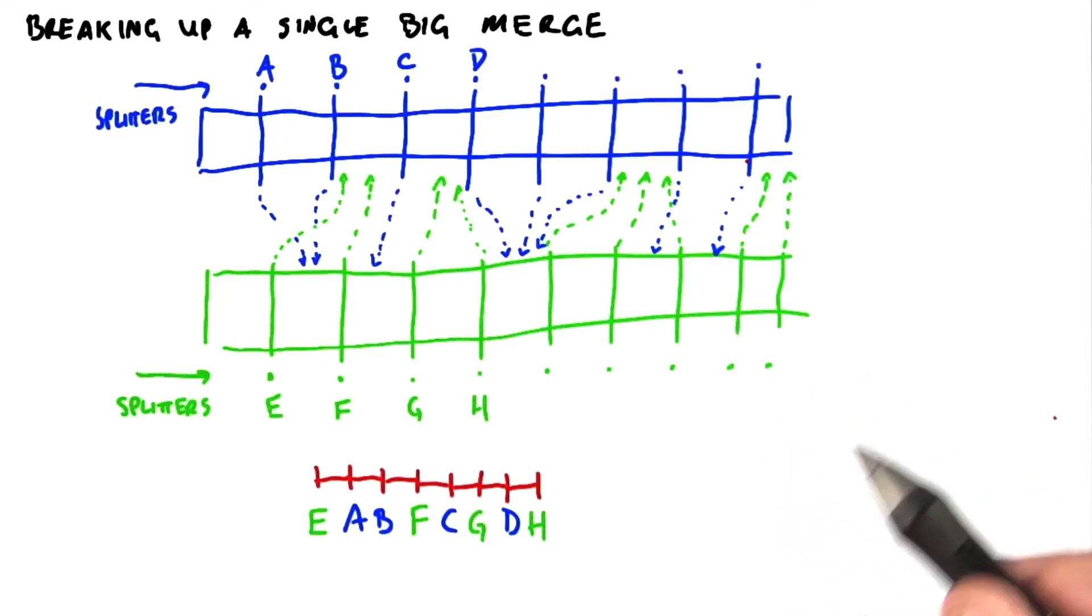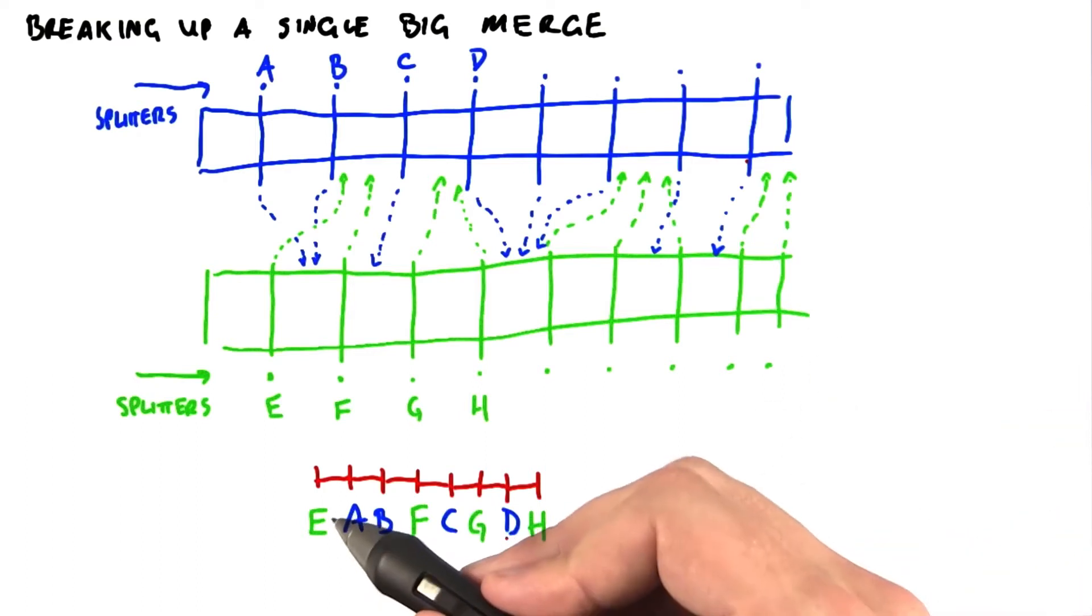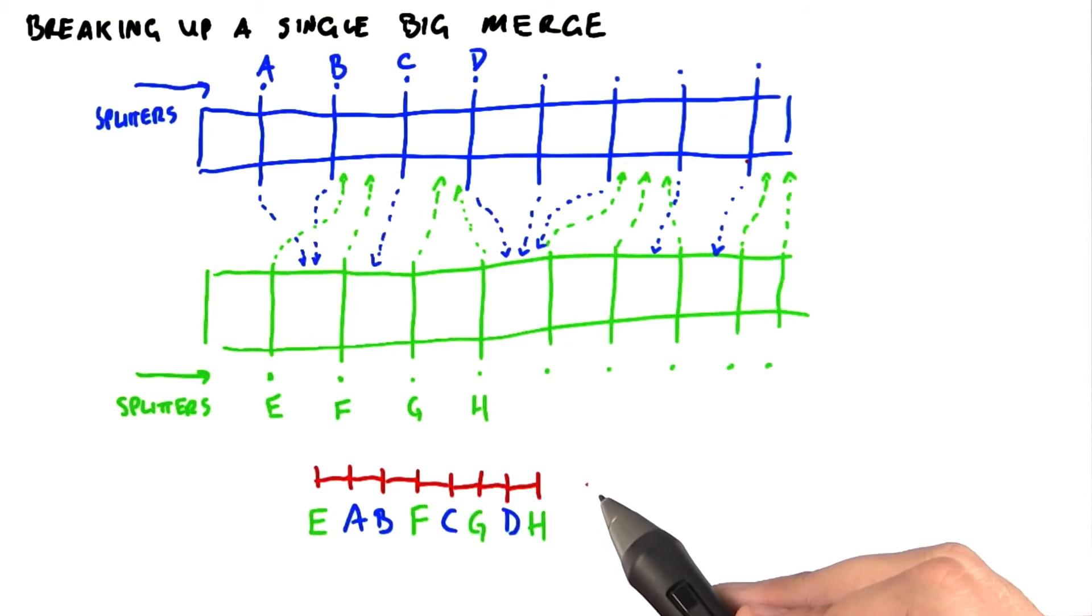Now, here's the cool bit. What I will submit to you is that we now have a sorted list of splitters, and the elements that fall between any two splitters in this list are an independent set that we can send to an SM and independently sort. So the elements between E and A can go to one SM. The elements between A and B can go to another SM and so on.